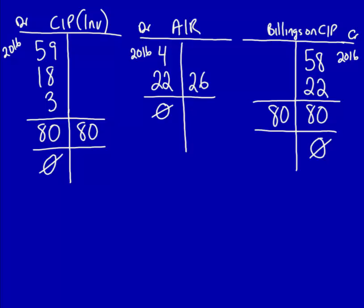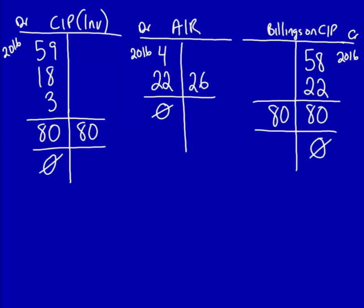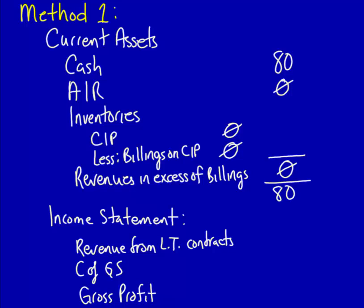Looking at the balance sheet at the end of 2017 using Method 1: cumulative cash $80, cumulative AR zero, CIP zero, billings on CIP zero, revenues in excess of billings zero — total on the balance sheet $80, which equals our cumulative revenues. Note that in reality these zero accounts would be omitted from the financial statements. For the income statement: revenue from long-term contracts $20, cost of goods sold $17, gross profit $3. At the end of 2017, the cumulative loss on the project is $1, recognized over three years.